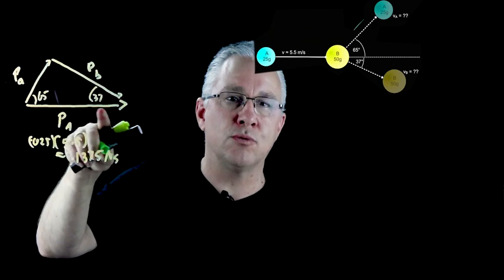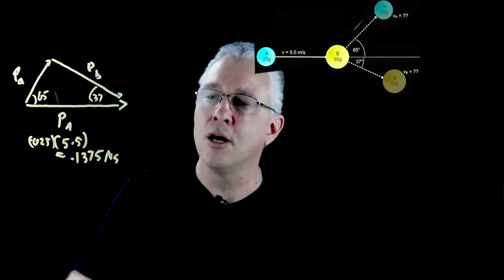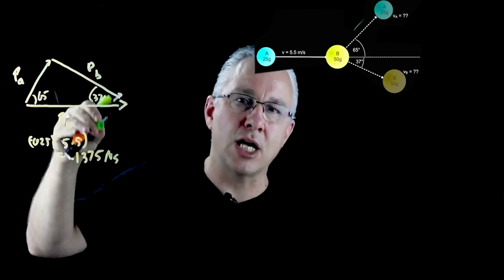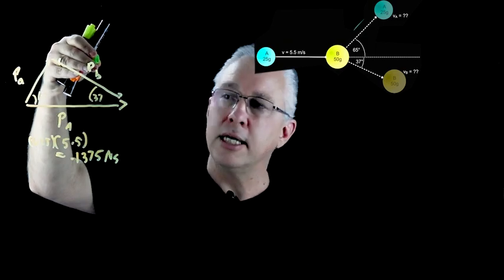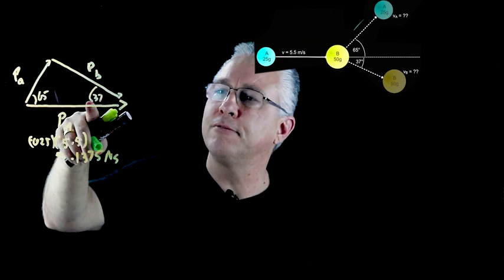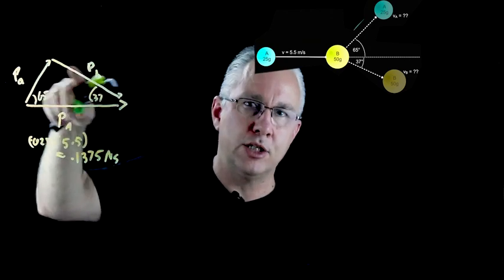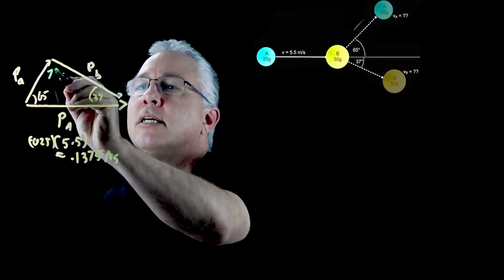Now this just requires a concept of something called the sine rule which says that the ratio of a side with the sine of the angle on the opposite side is equal in all the other ratios. How do we set this out? Well knowing that this is 65 and this is 37, we need to know what that angle is over here and that angle here ends up being 78.